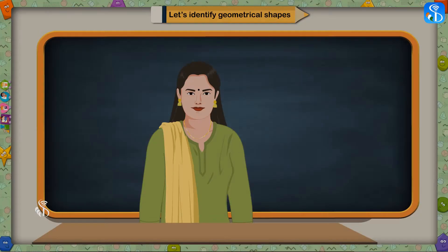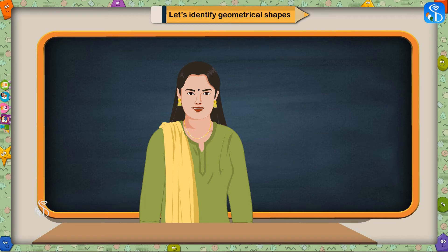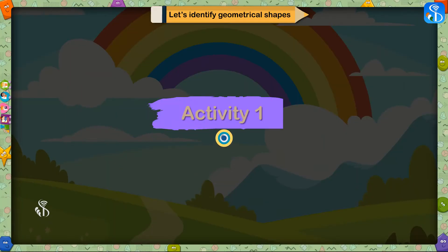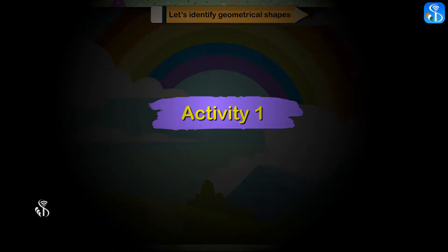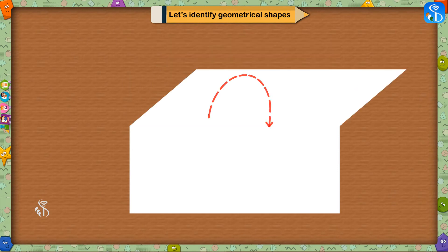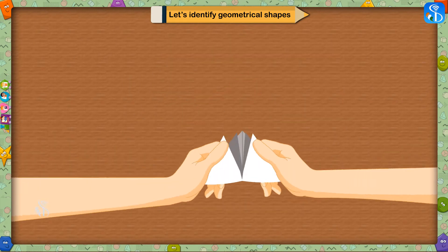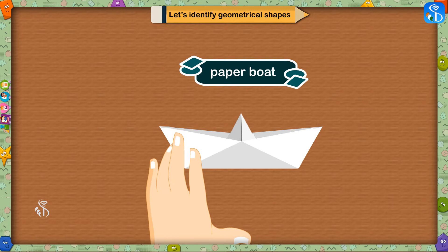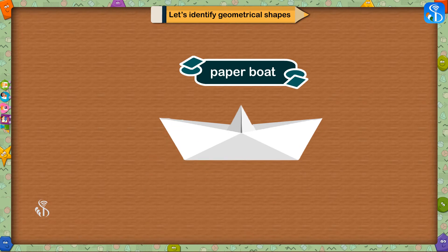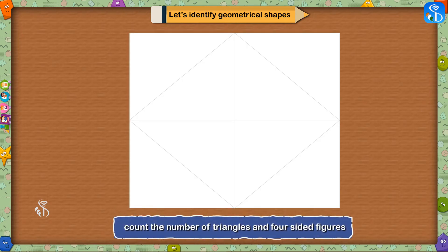Fun activity. Now let us have some fun. Activity 1: We will make a paper board first. Look, our paper board is ready now. We will unfold this paper board and count the number of triangles and four-sided figures.